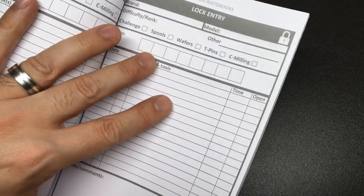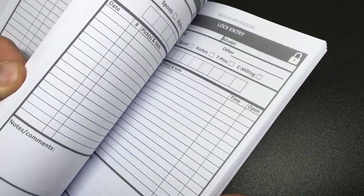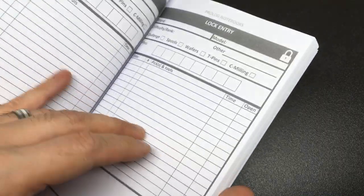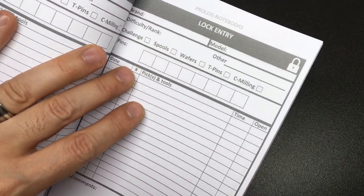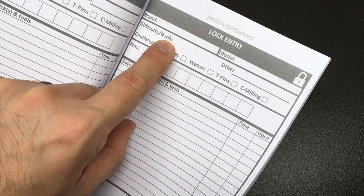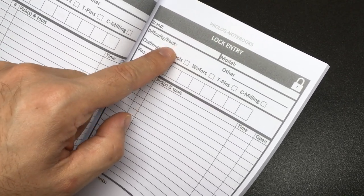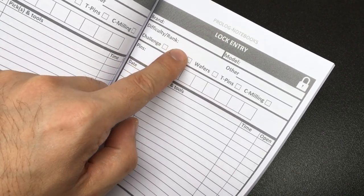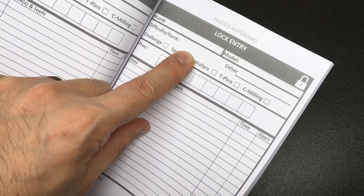So let's have a look at one of these pages. There are just over 80 pages of these lock entry logs. Obviously you have your brand, you have your model. Difficulty in rank I guess that you can decide how you want to do that, like high, medium, low or 1 to 10 or whatever you like. I mean this is your journal after all, so you can decide what your scale is.